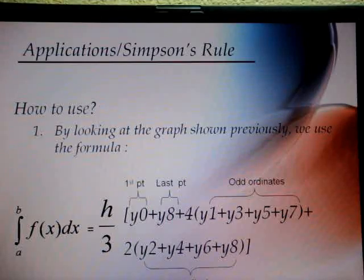As you can see, y0 will be my first point of my ordinate and the last point, y8, will be my last ordinate. Y1, y3, y5, and y7 will be my odd ordinates. And my even ordinates will be y2, y4, y6, and y8.